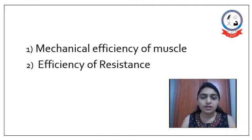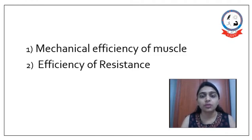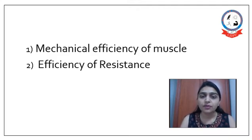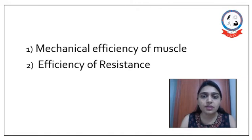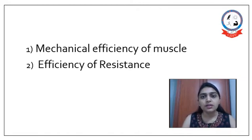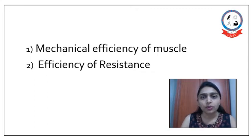These things can be understood as mechanical efficiency of a muscle and efficiency of the resistance. We need to understand at which angle the muscle is inserted into the lever — that is the bone — and at which angle it is most efficient for movement, as well as the efficiency of resistance at which angle the resistance given is most effective.